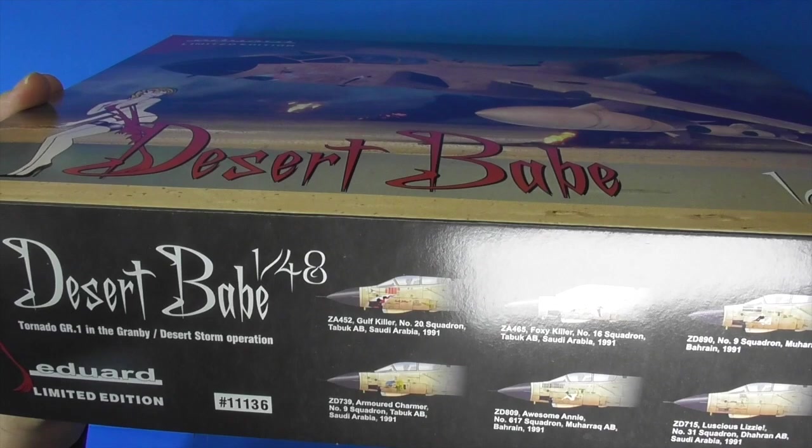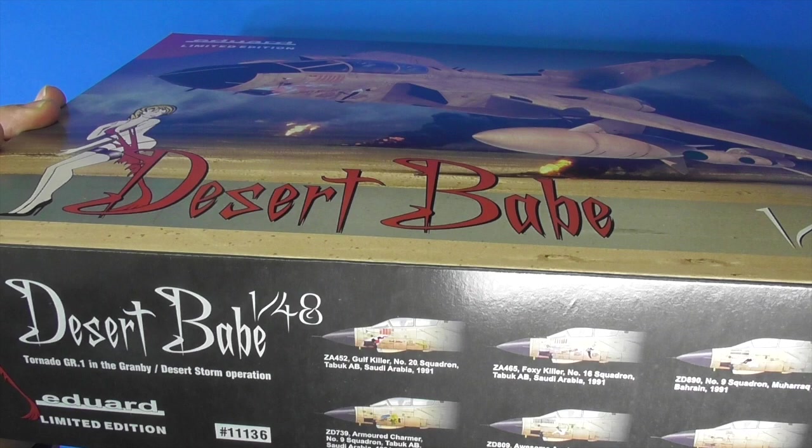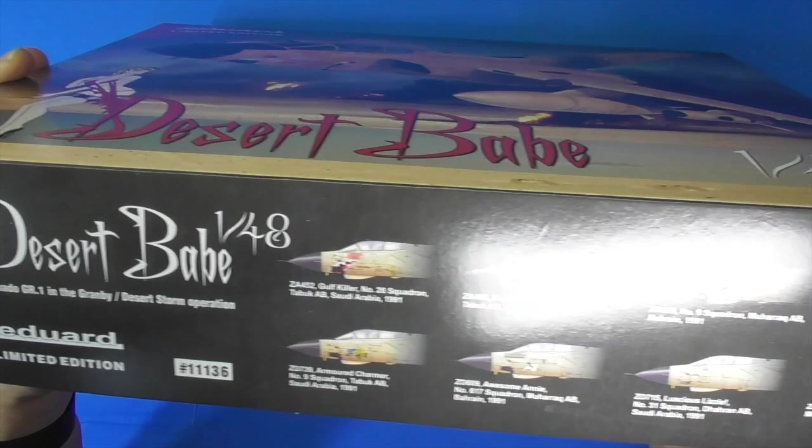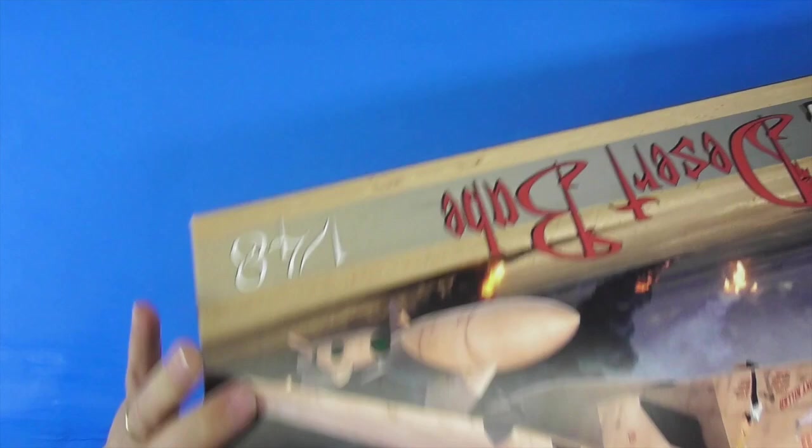Let me double check. Yes, Sprue Brothers still has them for $75. Revell plastic parts which I'm told are pretty good. Decals for eight markings, Eduard Bratton seats and wheels, photo etch and painting mask. So let's check out this beautiful kit. I have not opened it yet.